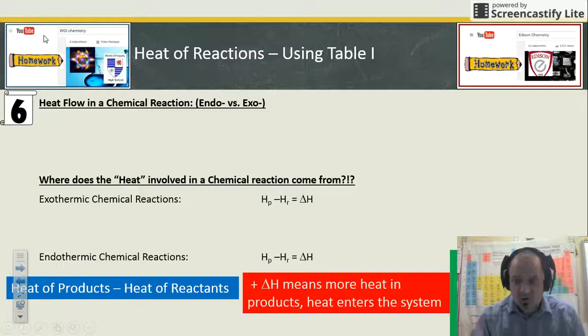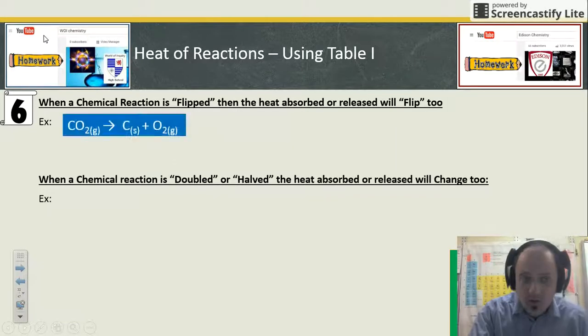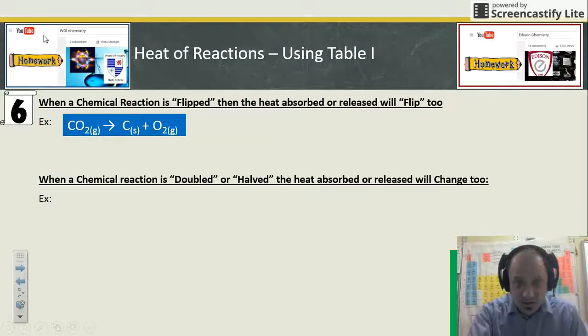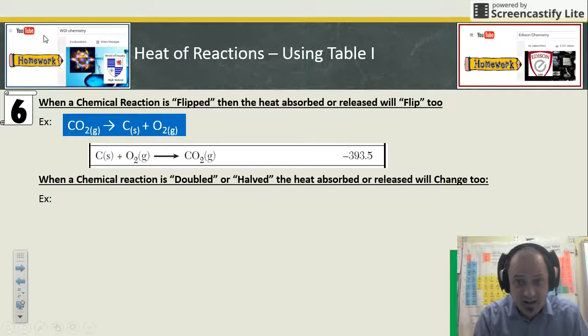When a chemical reaction overall is flipped back and forth, if we write it in one direction but we reverse it, the heat will be reversed as well. For example, carbon dioxide gas can be decomposed into carbon solid and oxygen gas. This is on table I. It says that reaction is a negative value for delta H, which means it releases heat. But if you were to flip it, it would be a positive system.